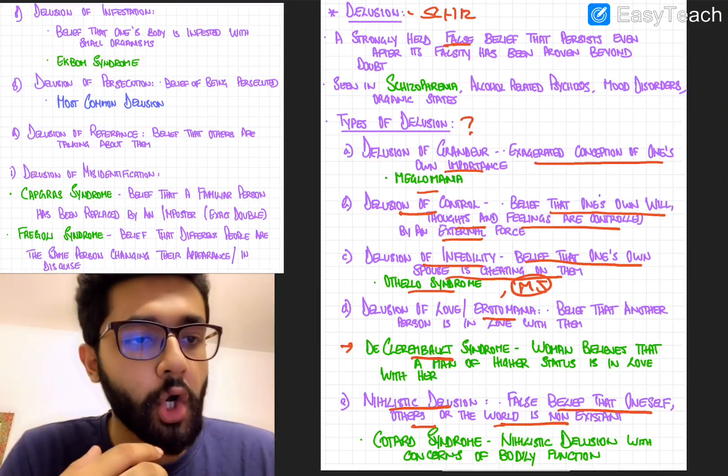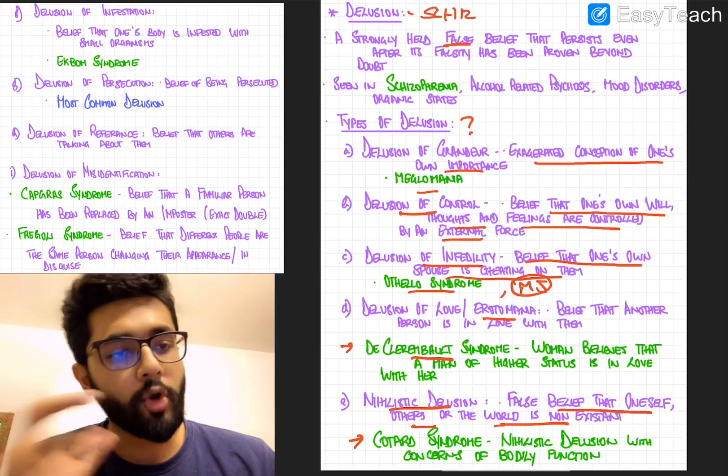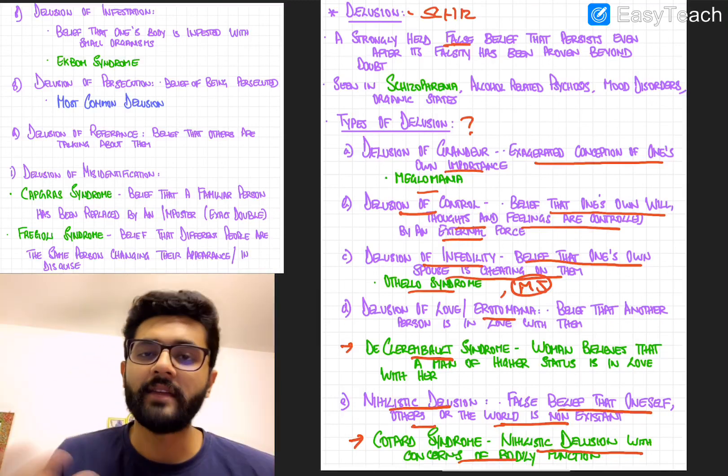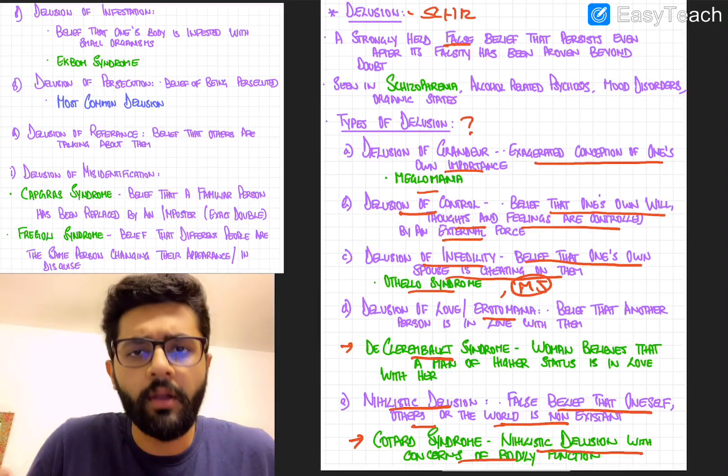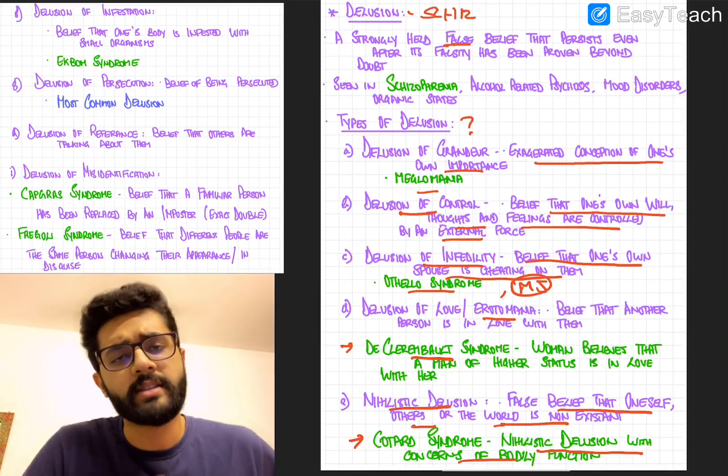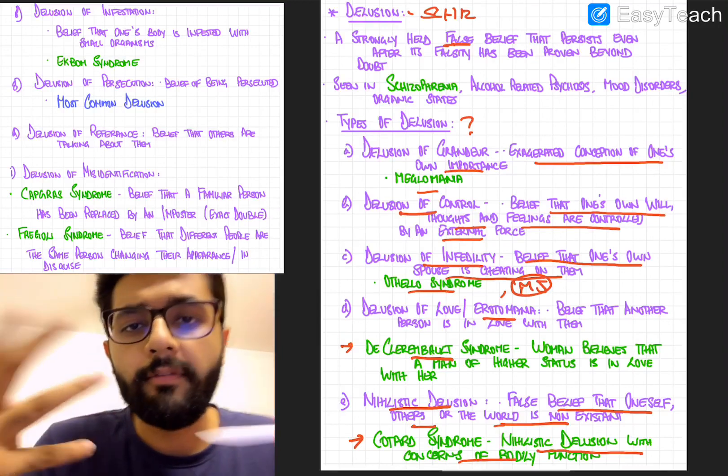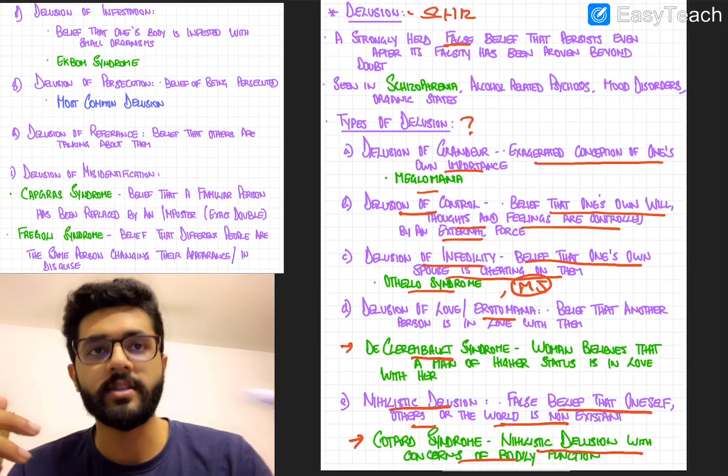So there's something called Cotard syndrome, which is again a subset of nihilistic delusion or a type of nihilistic delusion. So Cotard syndrome is a nihilistic delusion with concerns of bodily function. Usually the person feels that their intestines are not functioning or intestines are putrefying or their liver is absent or their heart is absent or their brain is liquefying or whatnot. So there is some organ function in question by the individual. So nihilistic delusion with concerns of bodily function is called Cotard syndrome.